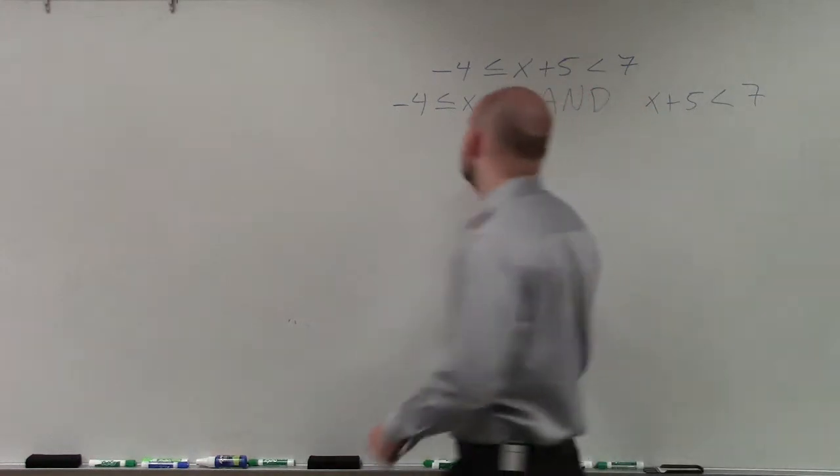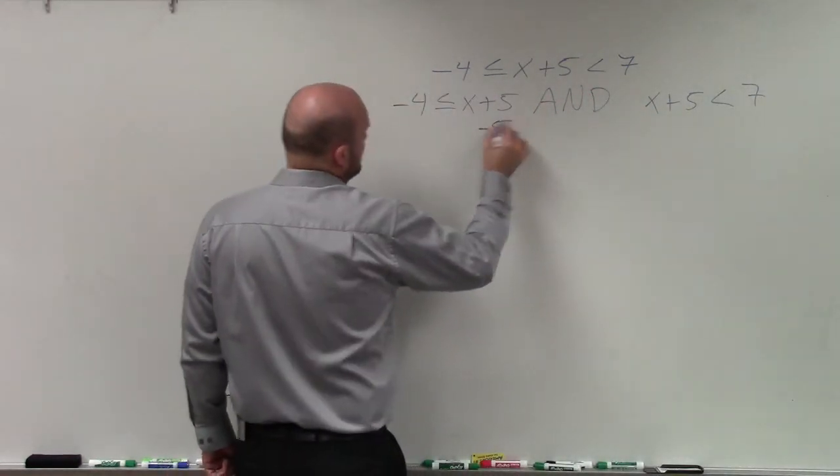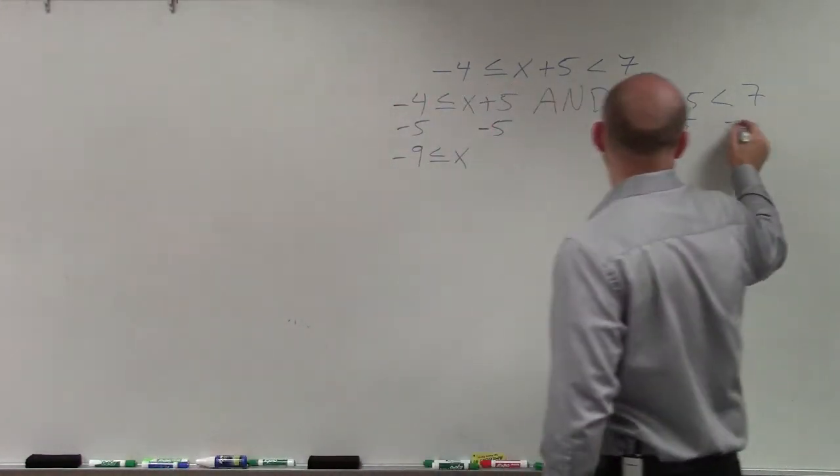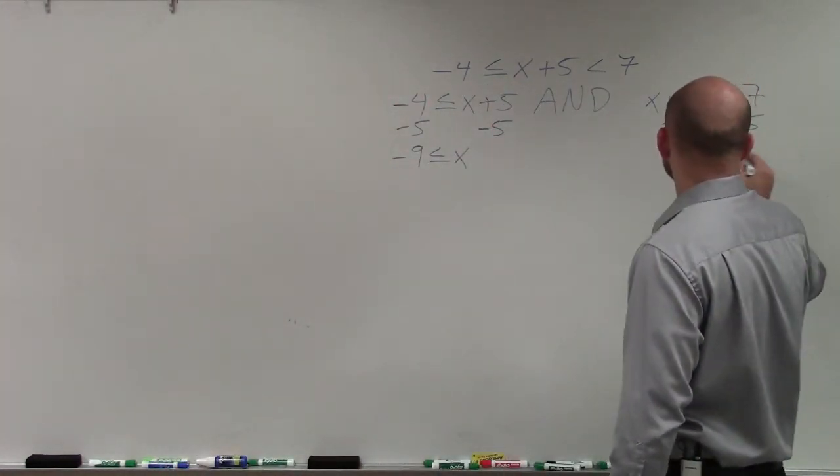So now, all I simply need to do is solve each one. So I'll subtract 5 here. So I have negative 9 is less than or equal to x. Subtract 5, subtract 5, x is less than 2.